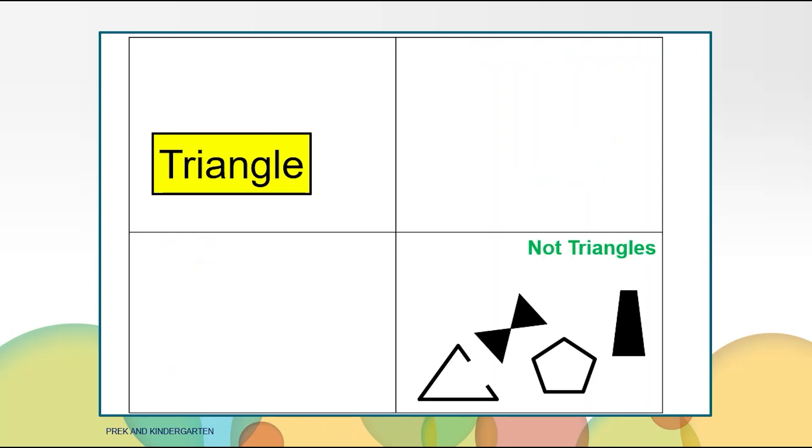These shapes are not triangles. The first shape is not a triangle because it is not a closed shape. It has a hole in the side. The next shape has six sides. It's not a triangle but it is two triangles together. The third shape has five sides and five angles. The last shape has four sides and four angles. And a triangle has three sides and three angles.